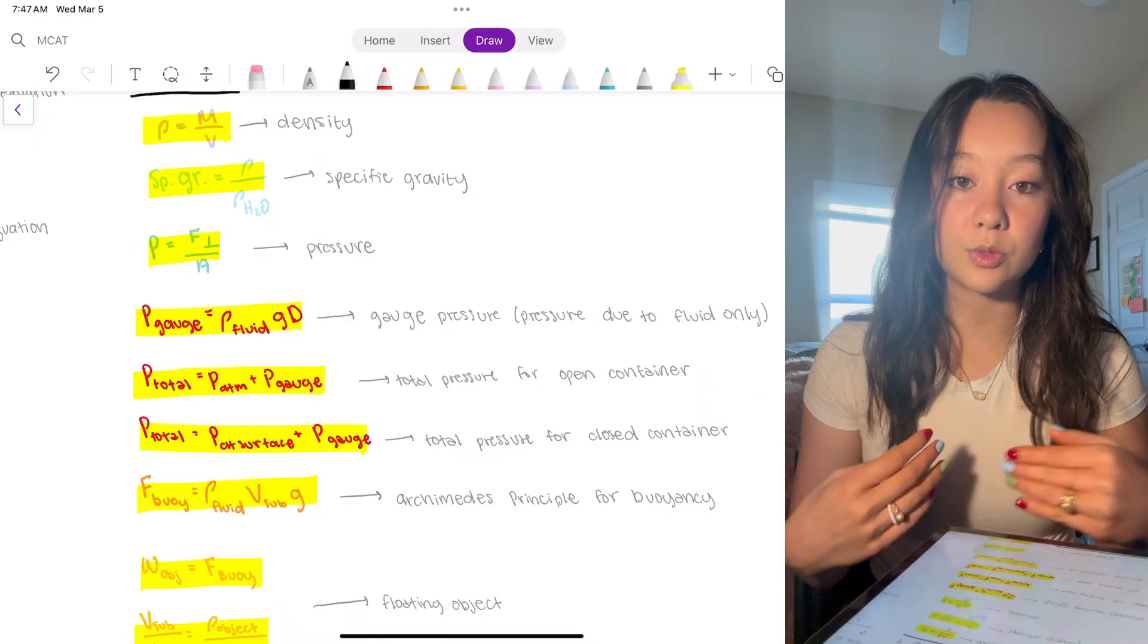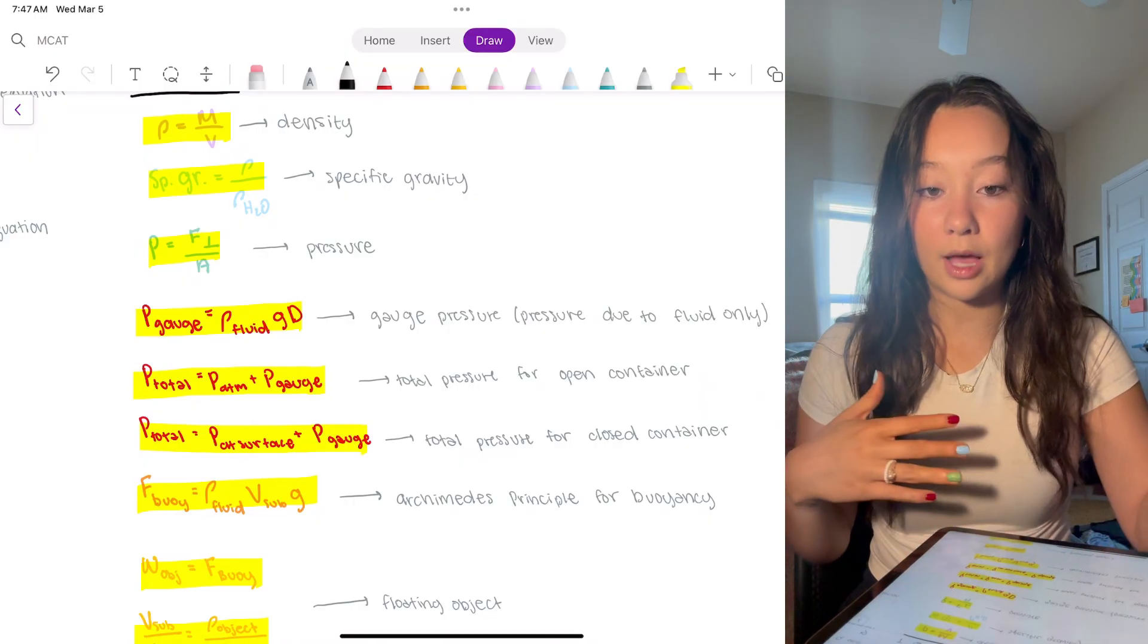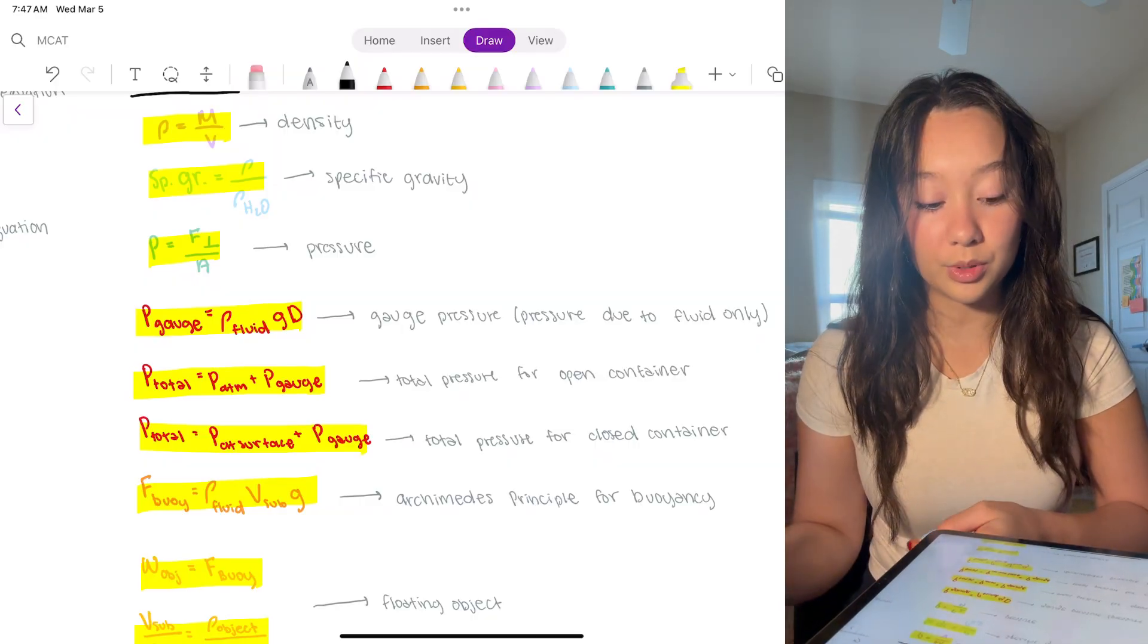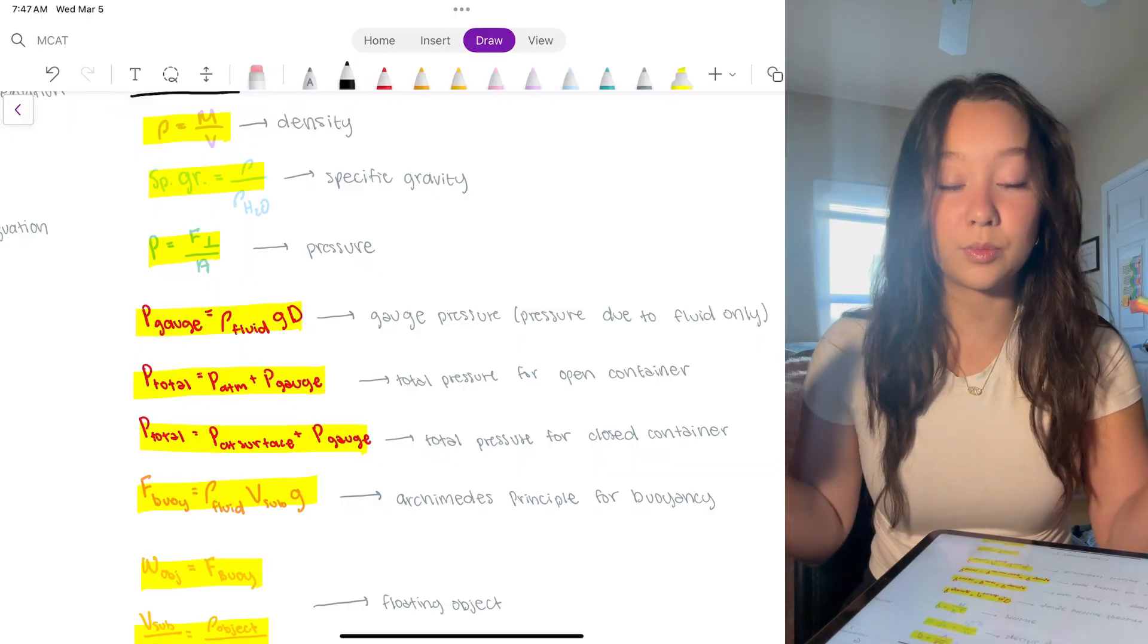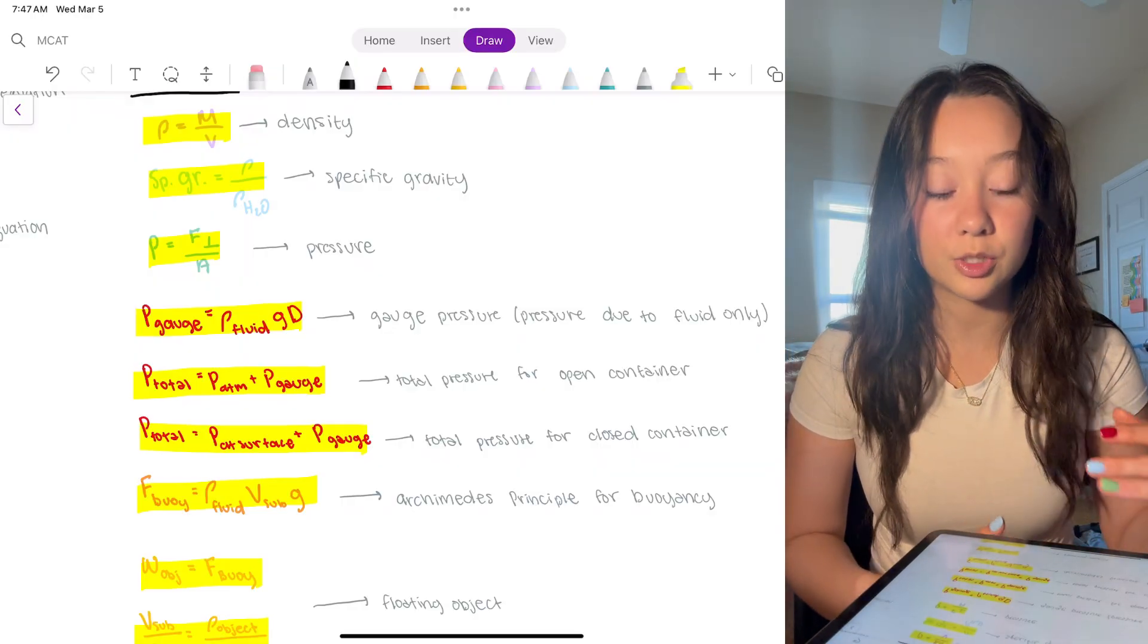It's saying that the pressure of the gauge is the density of the fluid times gravity times distance. And so the gauge pressure would be due to the fluid only. And then if you want the total pressure, you'd have to add the atmospheric pressure on top of that. And then the total would be the pressure at the surface plus the pressure at the gauge for a closed container. So it's just talking about that relationship there.